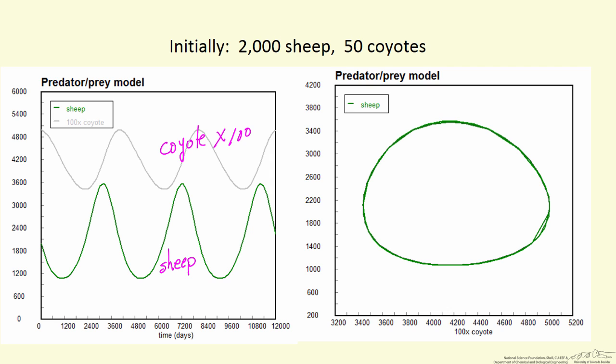There are large oscillations in the number of sheep and coyotes as a function of time. These oscillations are not in phase, meaning when I have a maximum in the sheep population, only at a later time do I have a maximum in the coyote population. Likewise with minima.